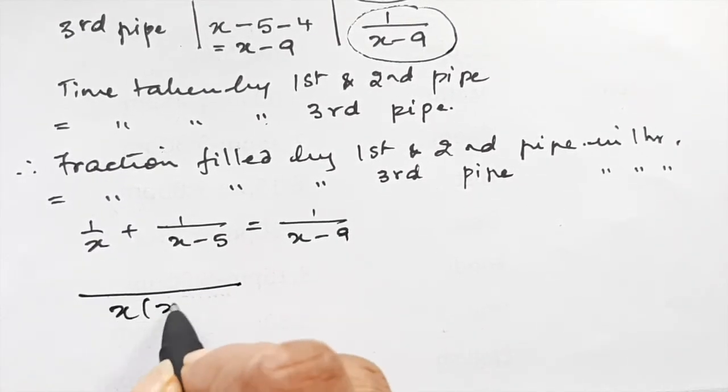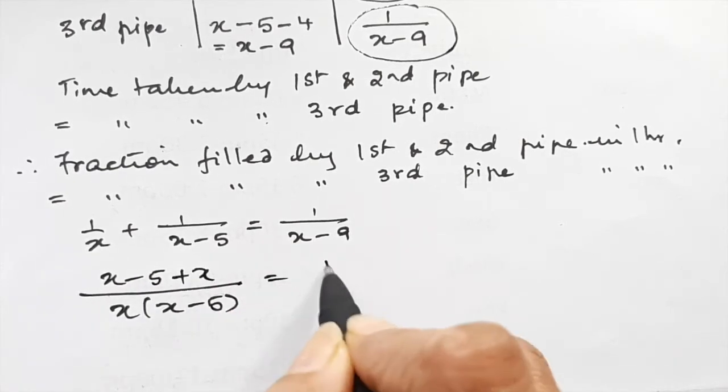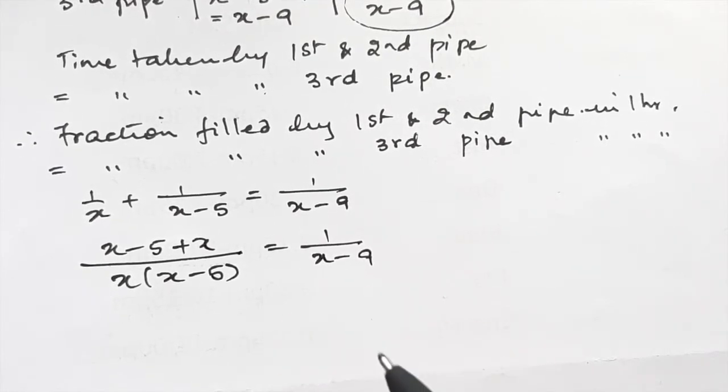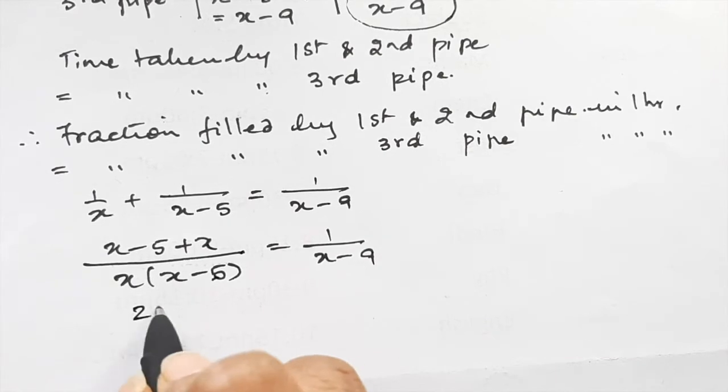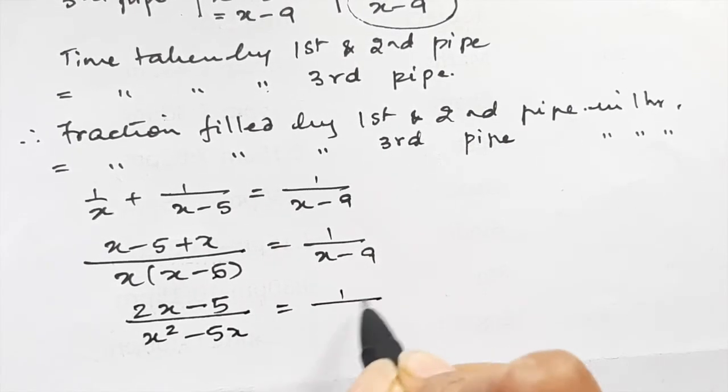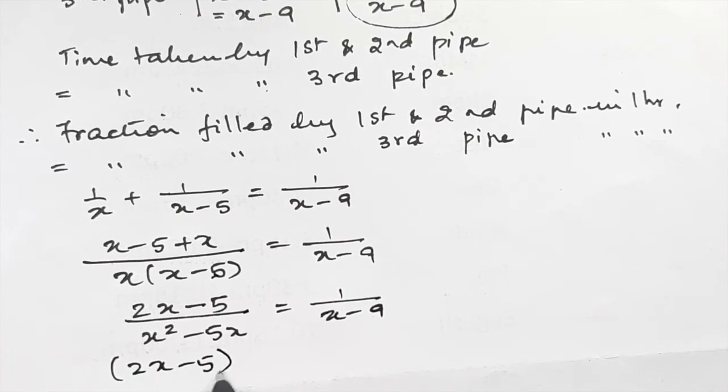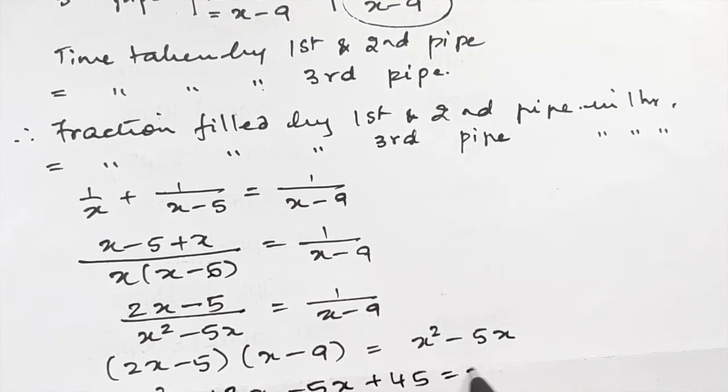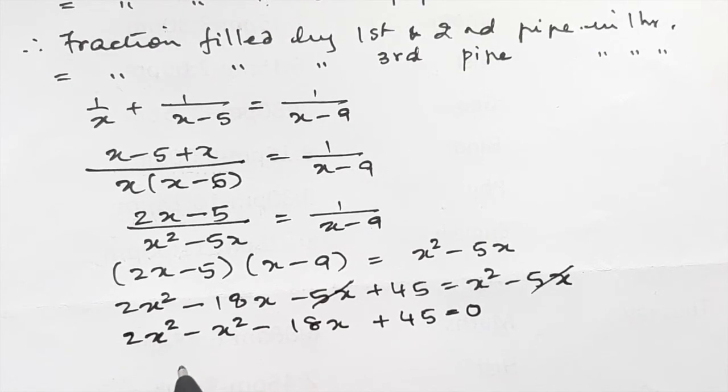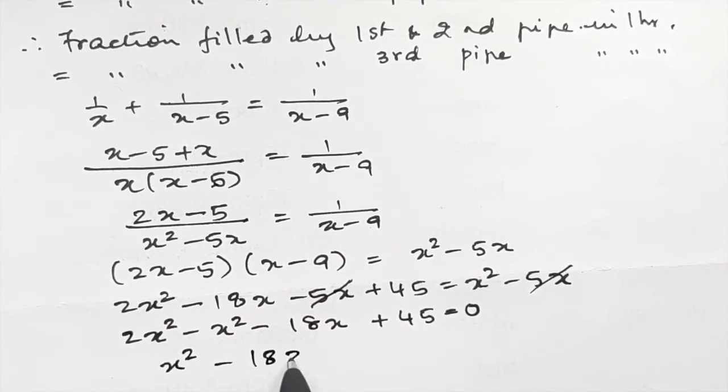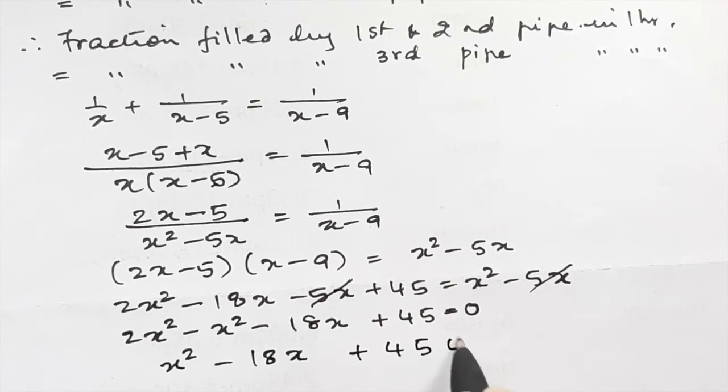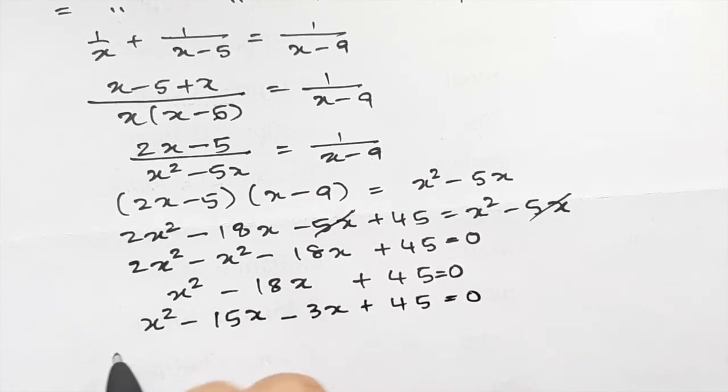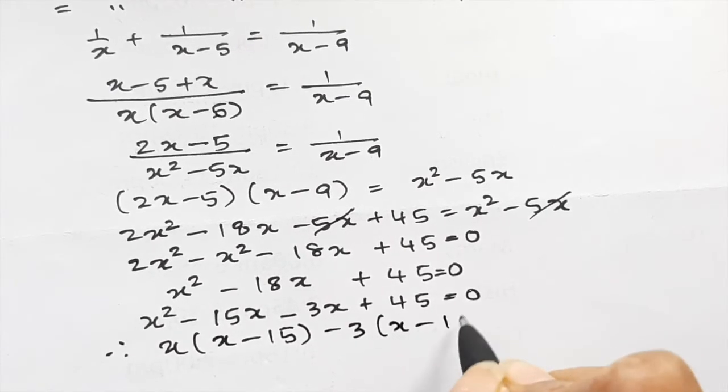Now we get an equation which we have to simply solve. Let us take the LCM. So we get (x-5+x)/(x(x-5)) = 1/(x-9). Now solve this on your own and let us see if your answer matches. Cross multiply: (2x-5)(x-9) = x(x-5). Expanding: 2x² - 18x - 5x + 45 = x² - 5x. Simplifying: x² - 18x + 45 = 0.